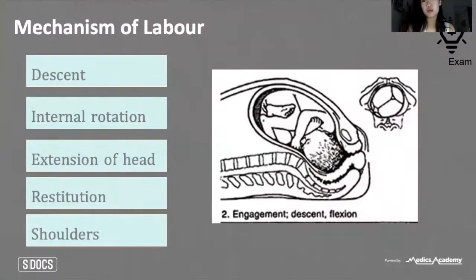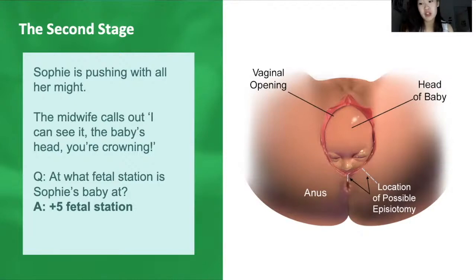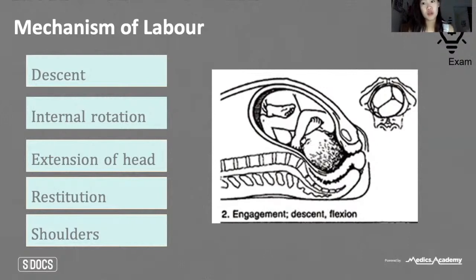At this point most of the work has been done by uterine contractions. What remains is to guide the safe passage of the baby out of the mother's pelvis through knowledge of the mechanism of labor and the angles required. A common trap for medical students is just memorizing the list of steps — it's much easier to understand what's happening at each step. Labor animation videos on YouTube are also a useful resource for visualizing the mechanism in 3D.